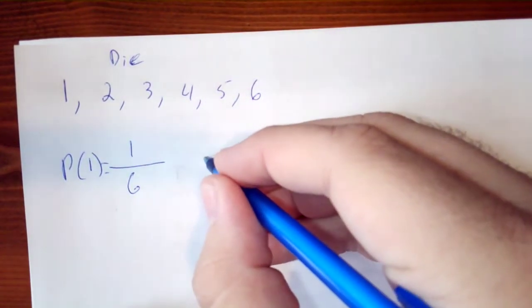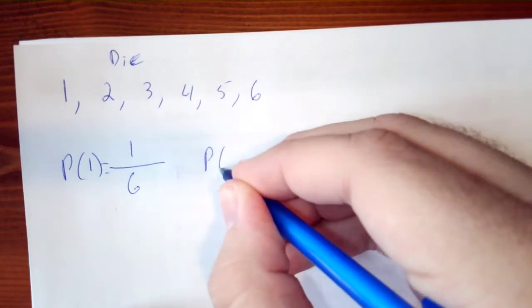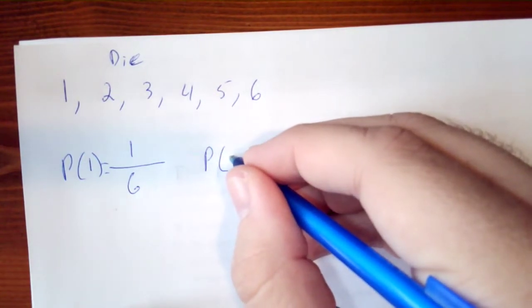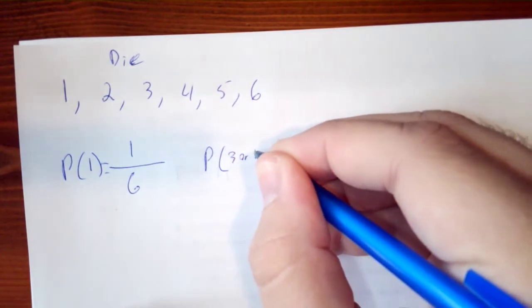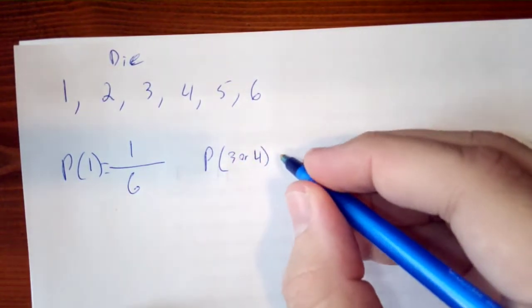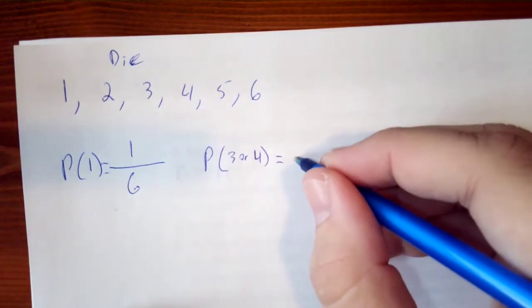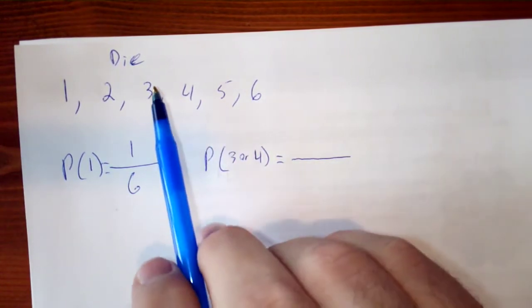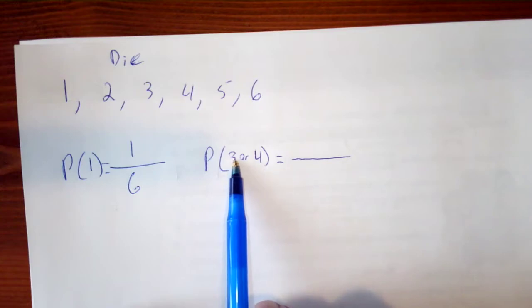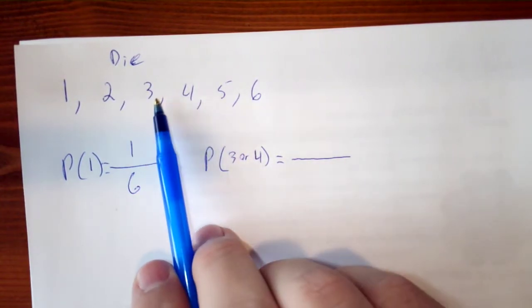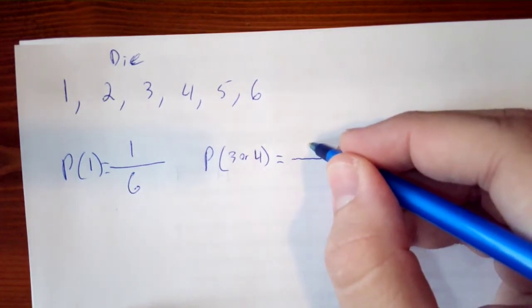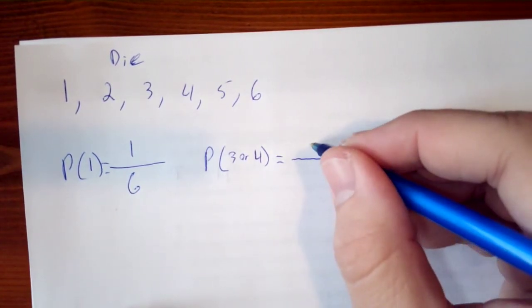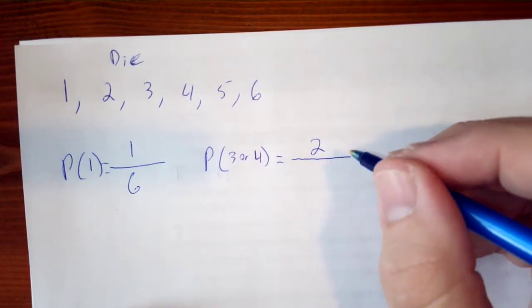But let's say we want to find out the probability of rolling a three or four. Okay, well, that changes things. We're looking for either a three or a four, so there are two numbers here that give us a favorable outcome.